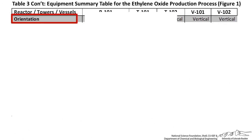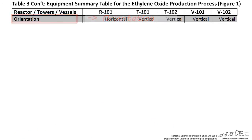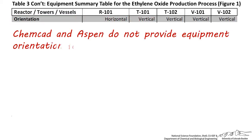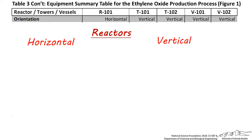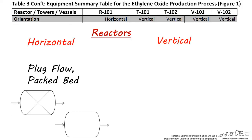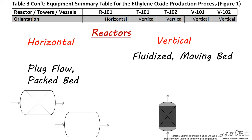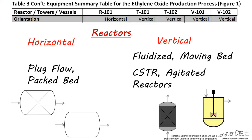Let's first look at orientation. Remember that ChemCAD or Aspen will not choose the equipment orientation for you, so you won't find this information under equipment specifications. Reactors can be horizontally or vertically oriented, depending on the type used. Plug flow and packed bed reactors are often horizontal. Fluidized and moving bed reactors are often vertical, and CSTRs and other agitated reactors are also usually considered vertical.